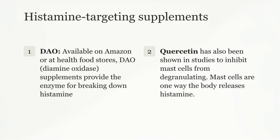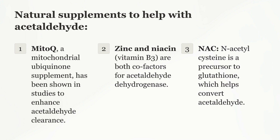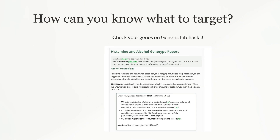Quercetin has also been shown in studies to inhibit mast cells from degranulating. Mast cells are one way the body releases histamine. Mito-Q, a mitochondrial ubiquinone supplement, has been shown in studies to enhance acetaldehyde clearance. Zinc and vitamin B3 are both cofactors for acetaldehyde dehydrogenase. N-acetylcysteine is a precursor to glutathione, which helps convert acetaldehyde. Visit GeneticLifeHacks.com to see which solution works best for your genes.